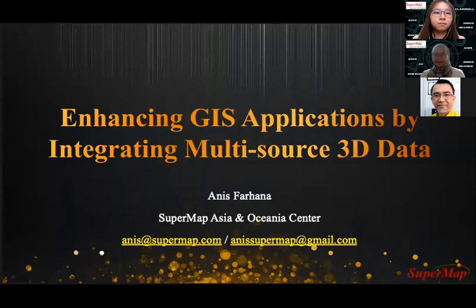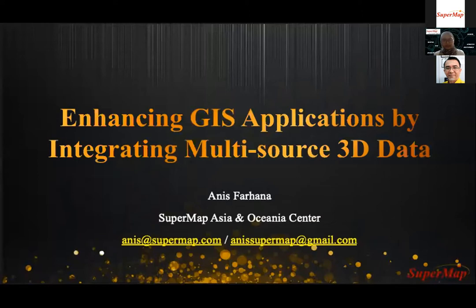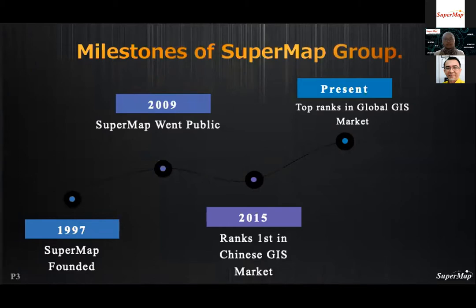Hello and good afternoon, everyone. I am Anis from SuperMap Asia and Oceania Center. Today I will be sharing with you on enhancing GIS applications by integrating multi-source 3D data. SuperMap software is an innovative GIS platform software and service provider, founded in 1997 in Beijing by Professor Zong Aishun. SuperMap was the first-listed GIS software company in China in 2009, and has since become one of the largest GIS platform manufacturers in the world.